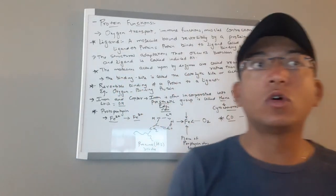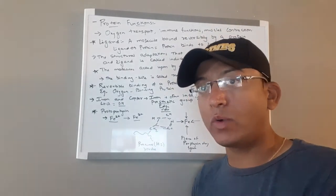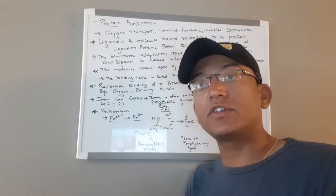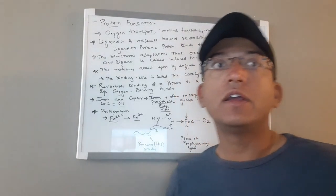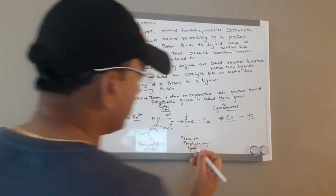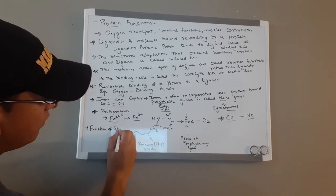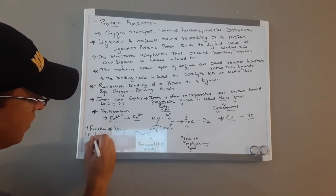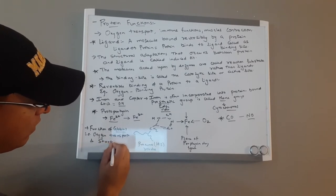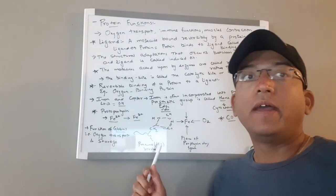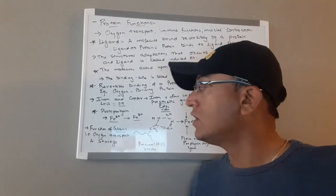By surrounding and sequestering the heme group inside the protein, the oxygen-binding protein regulates the access of small molecules to the heme ion. Globins are a widespread family of proteins that all have similar primary and tertiary structures, commonly found in eukaryotes of all classes and even in some bacteria. The most common functions of globins are oxygen transport and oxygen storage, although some also play a role in sensing oxygen, nitric oxide, or carbon monoxide.